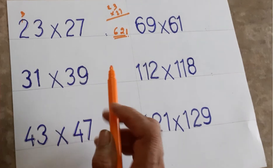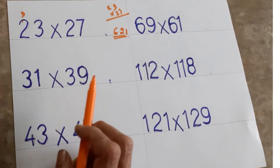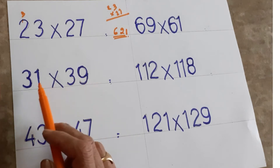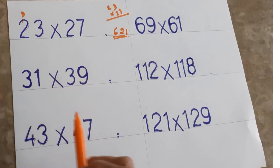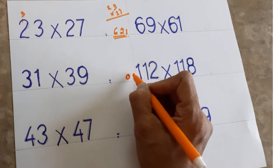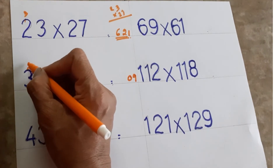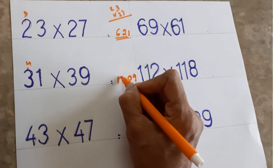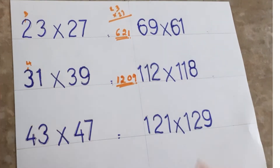Next example: 31×39. Look at the units place — nine and one. Nine ones are nine. Whenever a single digit comes, you have to write zero nine, so write 09. Then three means after three take the next number: three fours are twelve. So the answer is 1209.